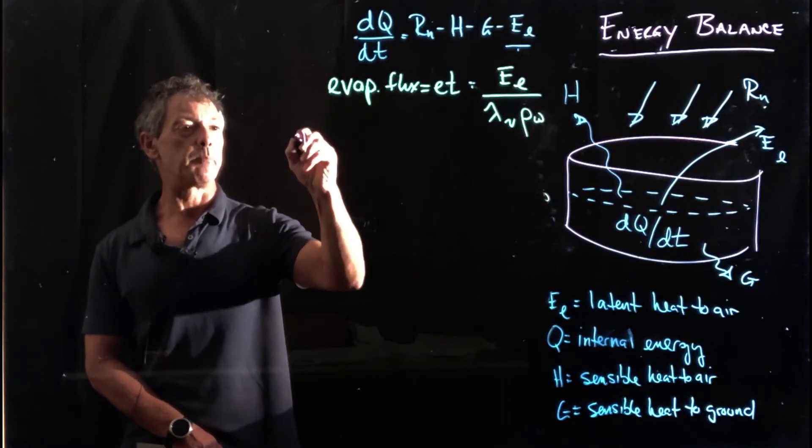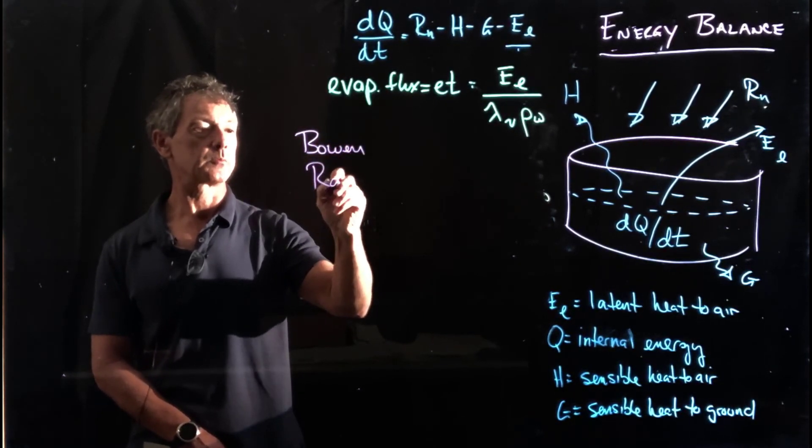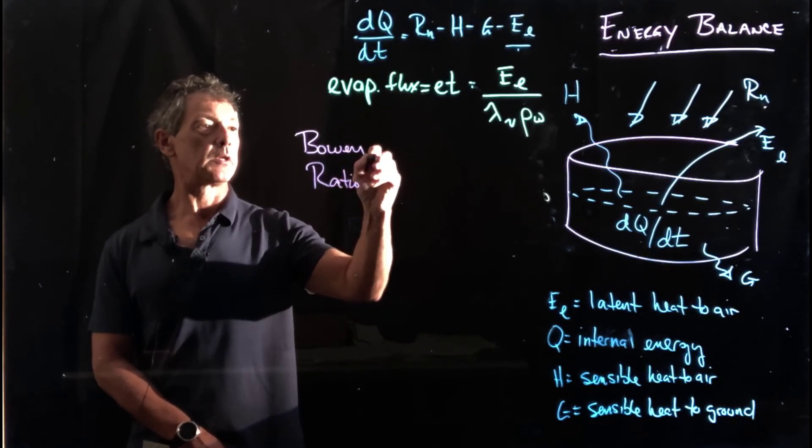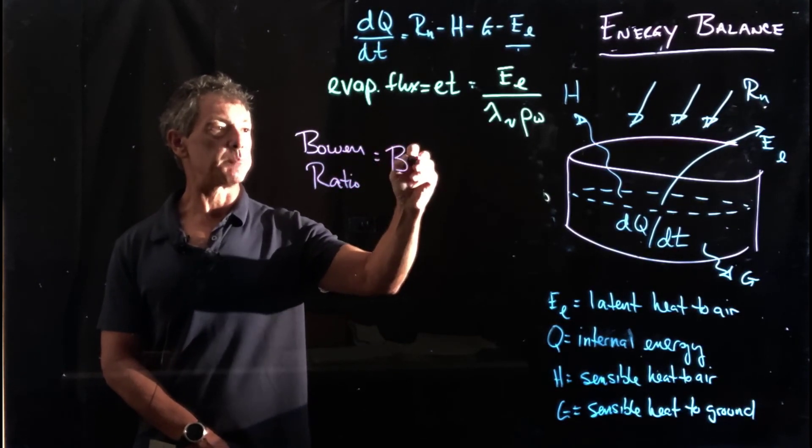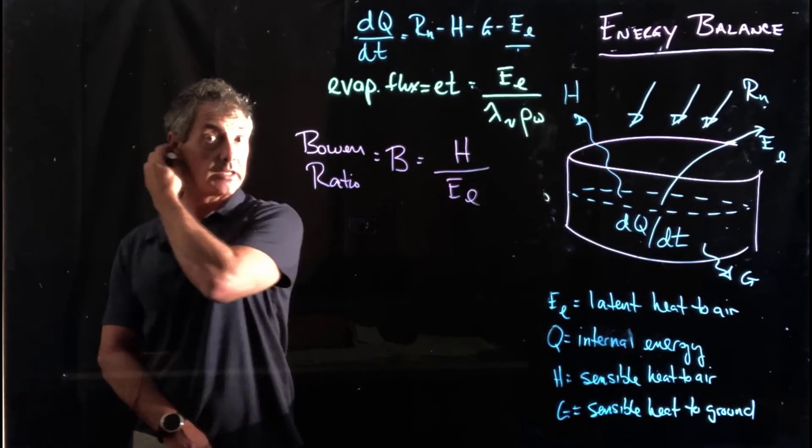So there's a term called a Bowen Ratio. And we give that as B. And that's the ratio of the sensible to the latent heat.